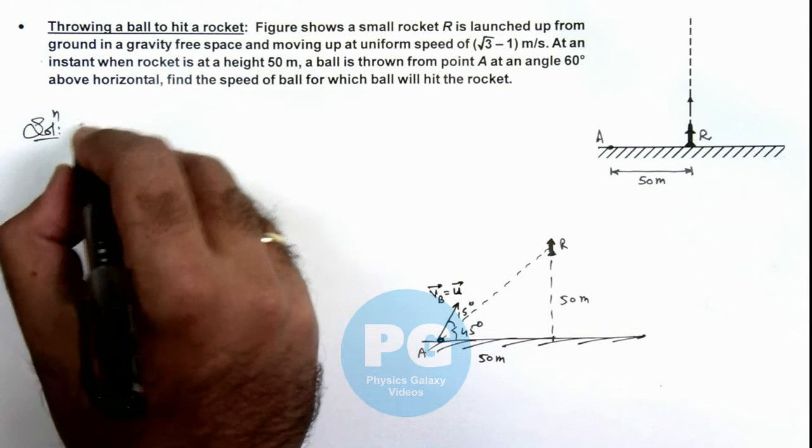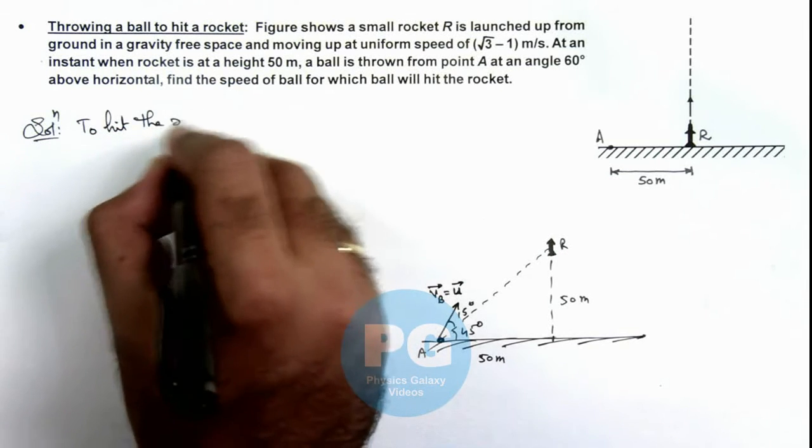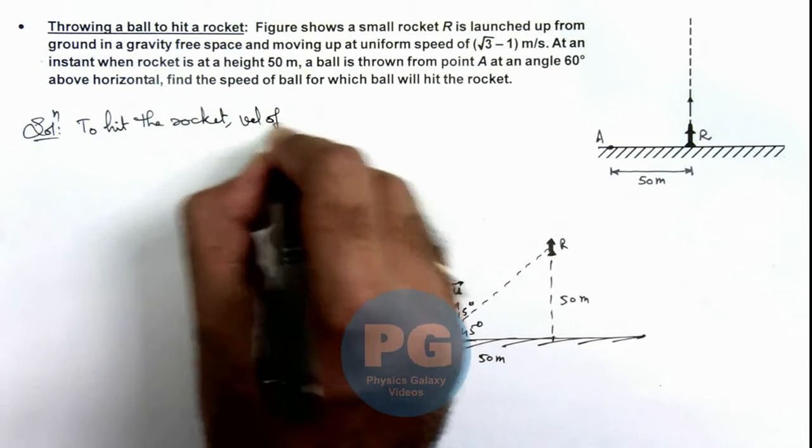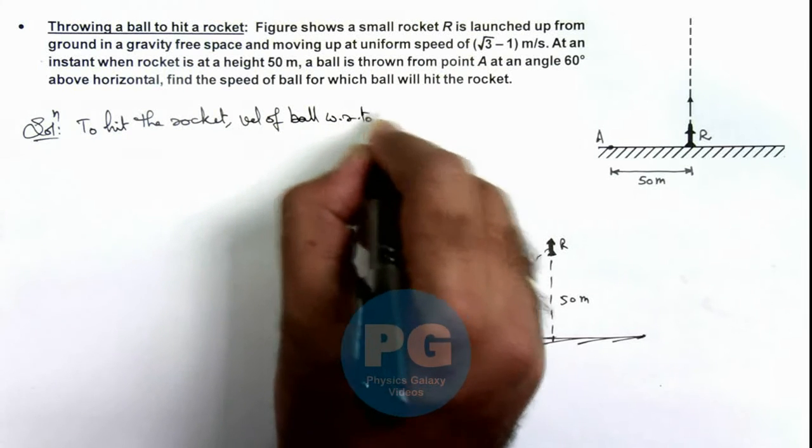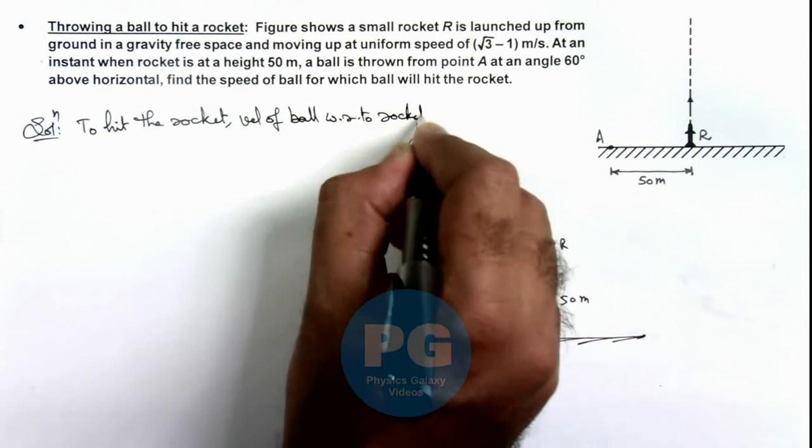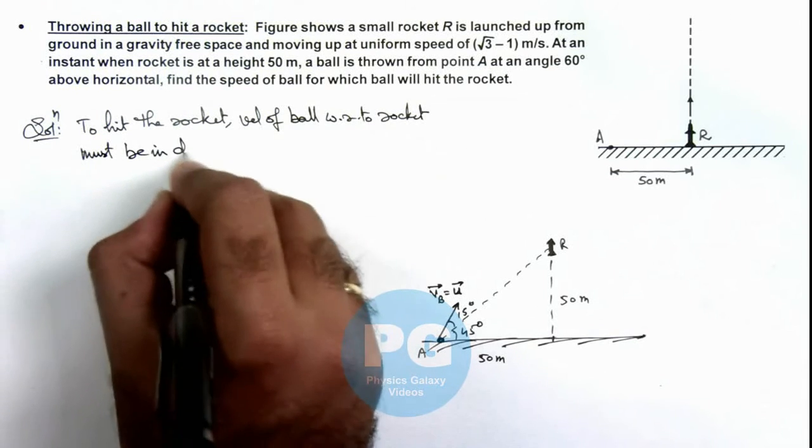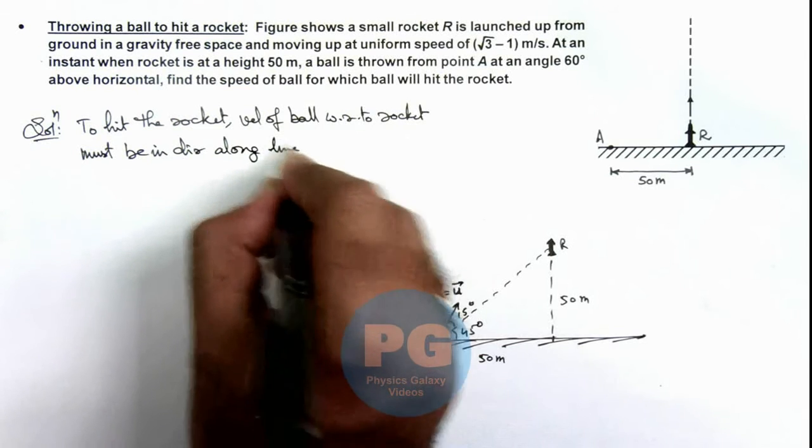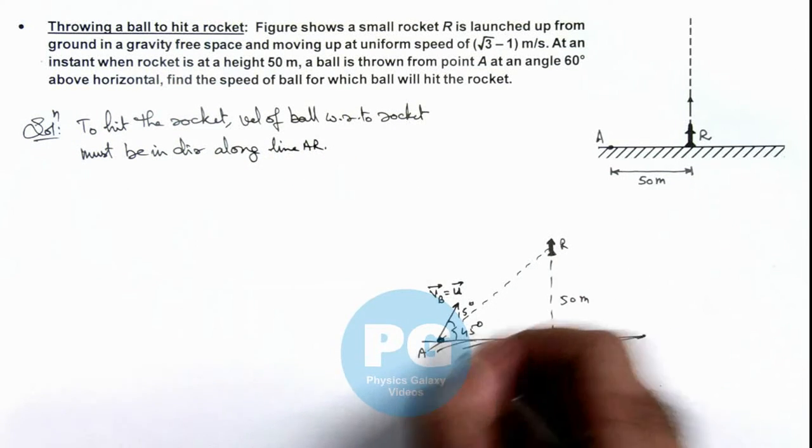So here we can write: to hit the rocket, velocity of ball with respect to rocket must be in direction along line AR. Then only, if we consider the rocket at rest, the ball will hit it.